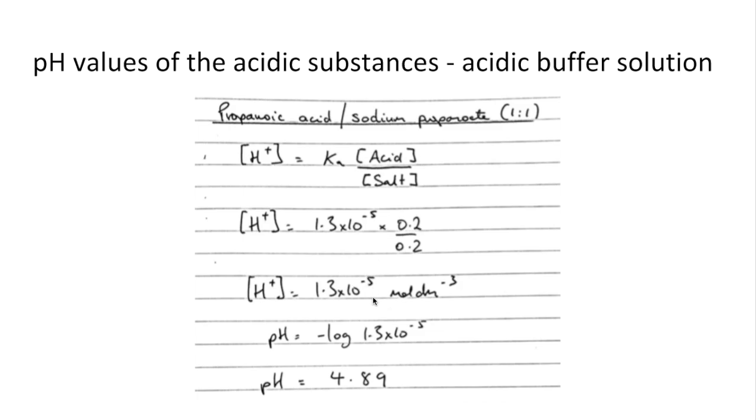So the H plus concentration is effectively equal to the Ka value of the weak acid, the propanoic acid. And you can see there that comes out to a pH of 4.89.